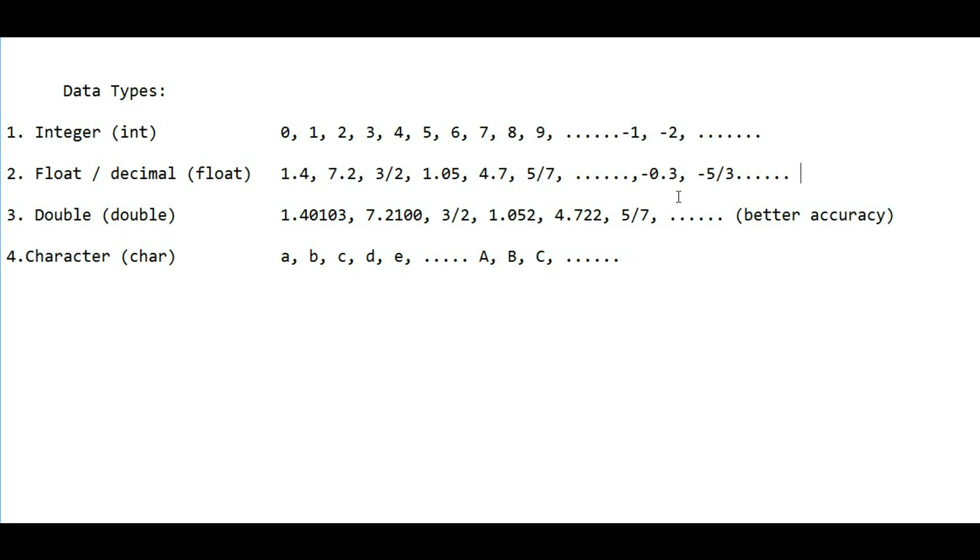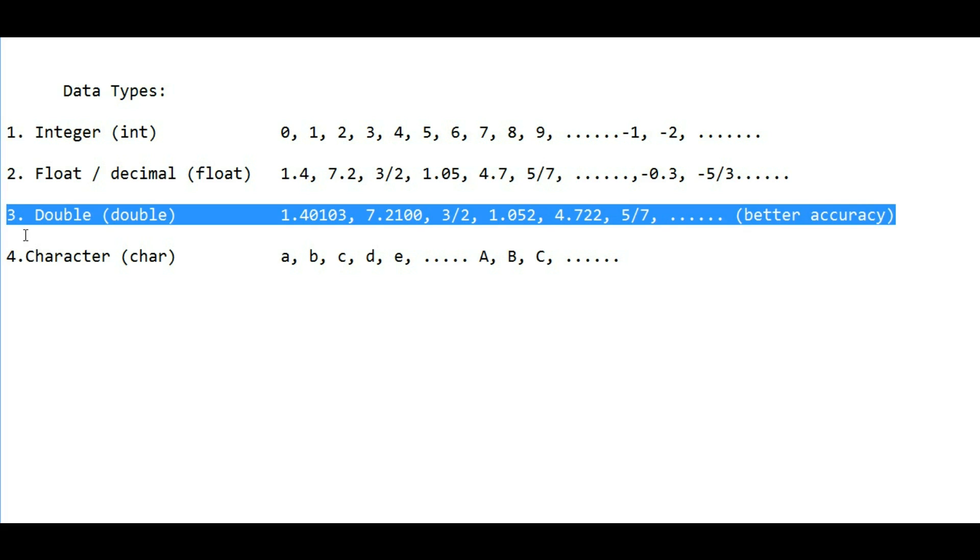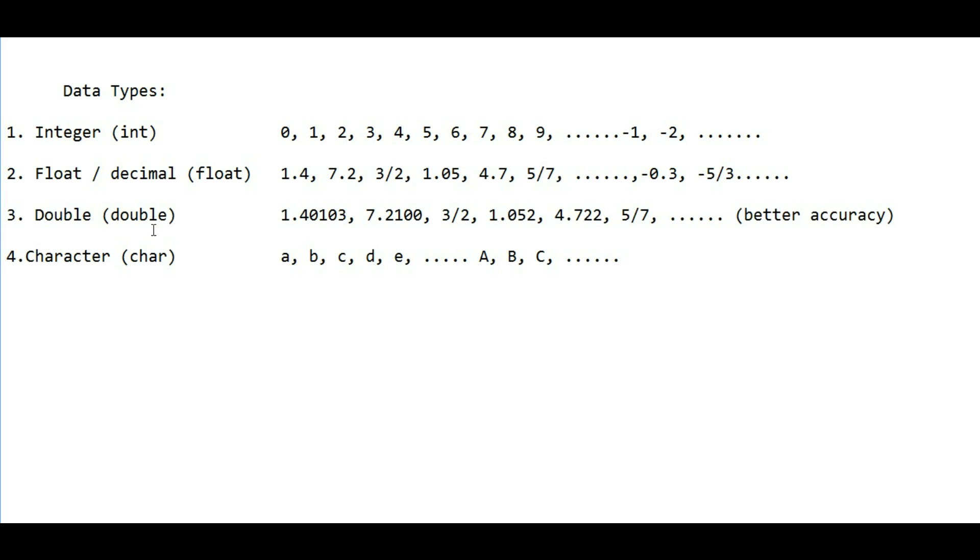The third type we have is double. Actually, the double part and the float part are kind of the same, but double has better accuracy than float. It's denoted by double (D-O-U-B-L-E), and float is denoted by float.